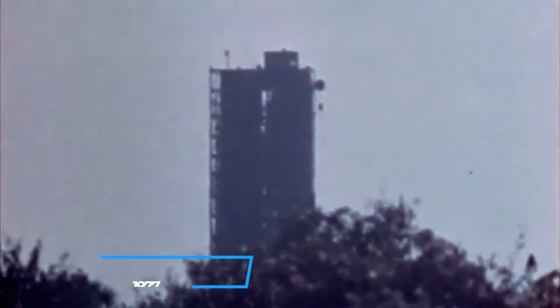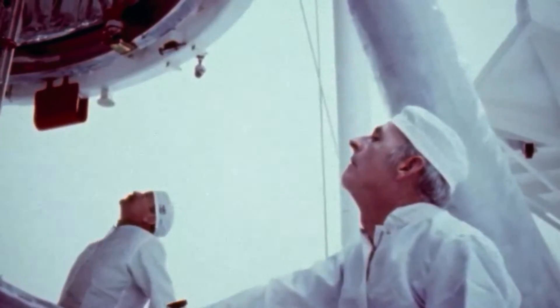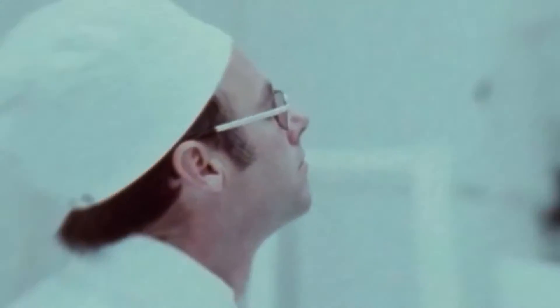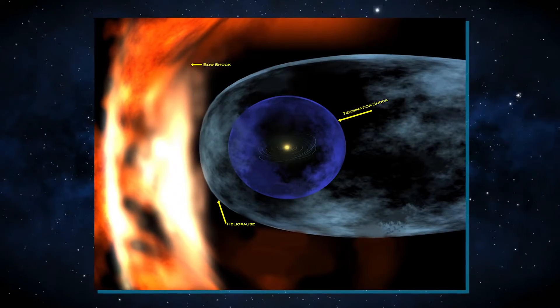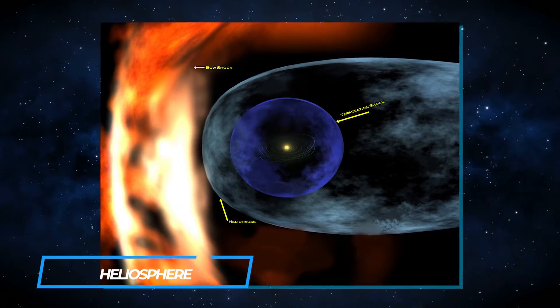On September 5th, 1977, a remarkable and daring mission took flight as NASA launched Voyager 1. This mission was not only audacious but also groundbreaking in its scope. Voyager 1 had a primary mission to explore the outer reaches of our solar system and venture into the vast interstellar space beyond our sun's protective shield known as the heliosphere.